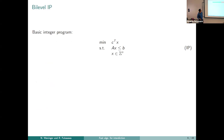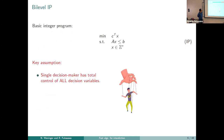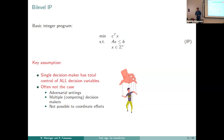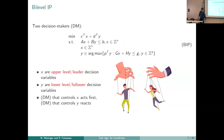I've worked mainly on integer programming for a long time. A basic integer program minimizes an objective function subject to linear constraints and integrality constraints. The key assumption inside this integer program is that there is a single entity that can control all the decisions. But that's often not the case — there are situations where you can only partially control, and other people are involved in taking decisions. So in the bi-level setting, there is an extra decision maker involved.